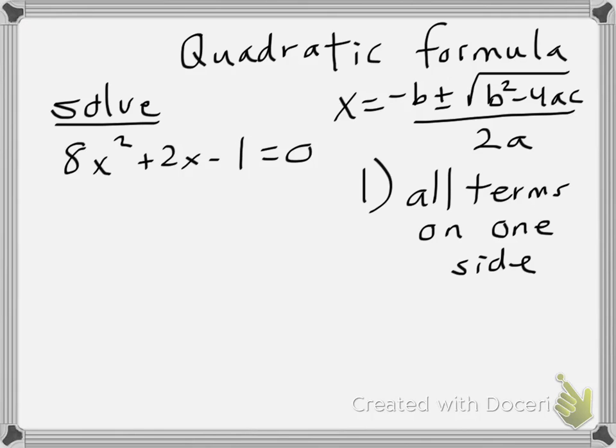So here I have 8x squared plus 2x minus 1, and I put it into my formula. In this case, I note that a is equal to 8, b is 2, c is negative 1.